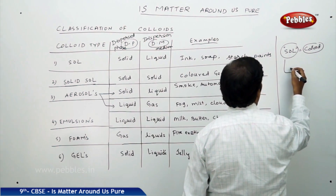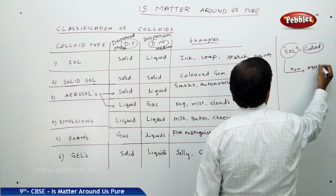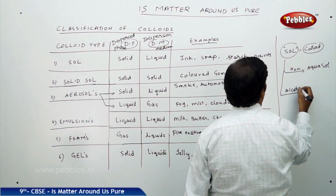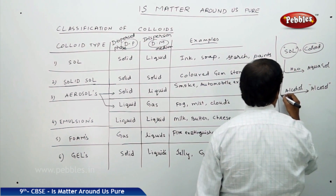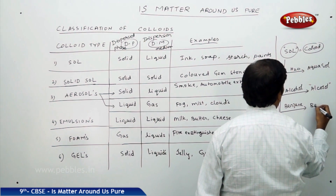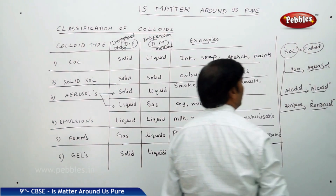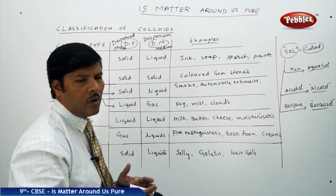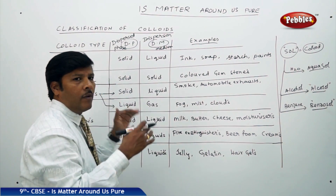If the dispersion medium is water, the sol becomes aquasol. If the dispersion medium is alcohol, the colloid is called alcosol. If the dispersion medium is benzene, we call it benzosol. Different kinds of sols are discovered this way. Sol is a synonym for colloid — depending on the kind of dispersed phase and dispersion medium, the colloid in the form of sol keeps changing.